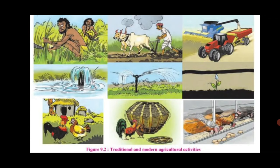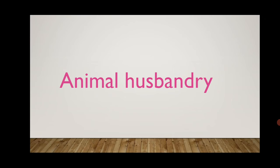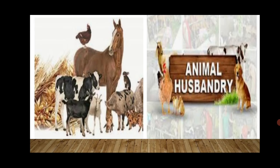Now let us get introduced to the different occupations that come under the scope of agriculture. We use the products of these occupations in our everyday life. These traditional occupations are allied activities in agriculture. Allied activities means closely connected to agriculture. Let us begin with animal husbandry.